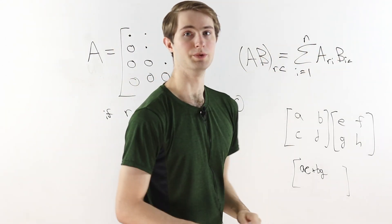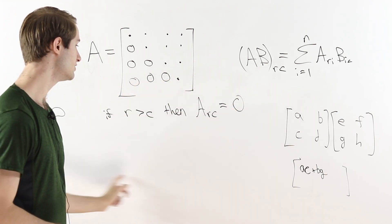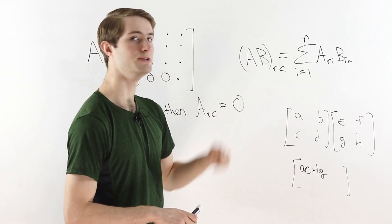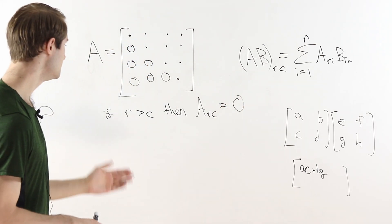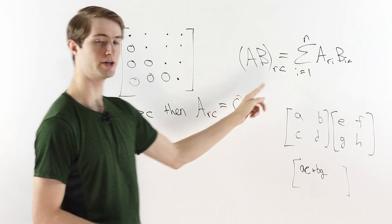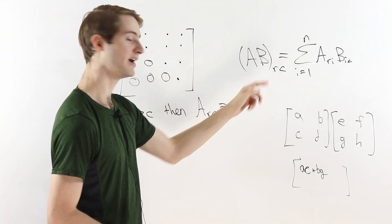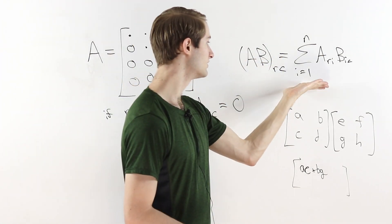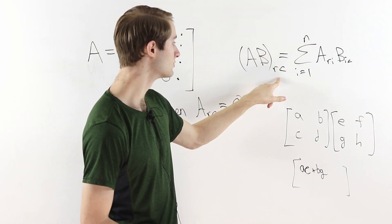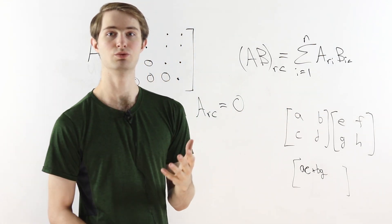Using this formula, we can prove the result for upper triangular matrices. Our goal is to show that the product AB is upper triangular, meaning that if row R is greater than column C, then the entry at position (R, C) in AB equals zero. In other words, we need to show that this sum equals zero whenever R is greater than C.